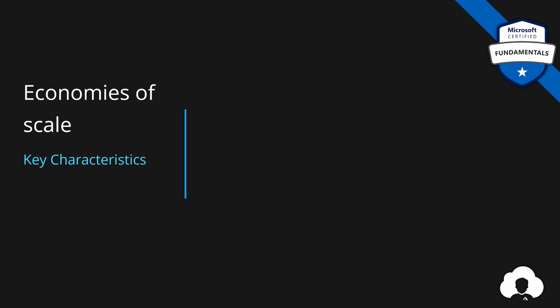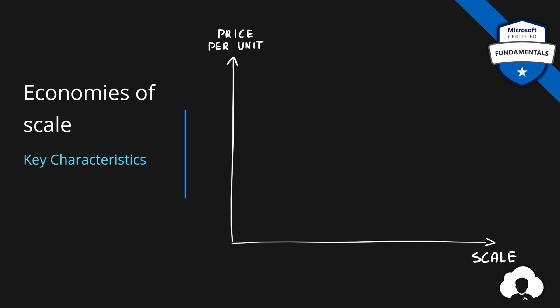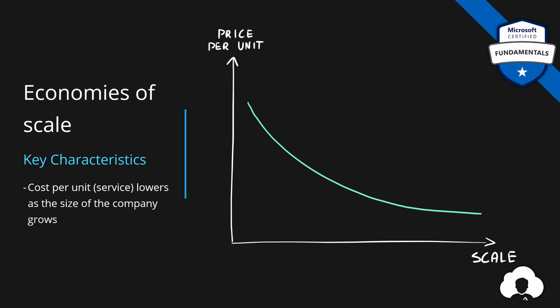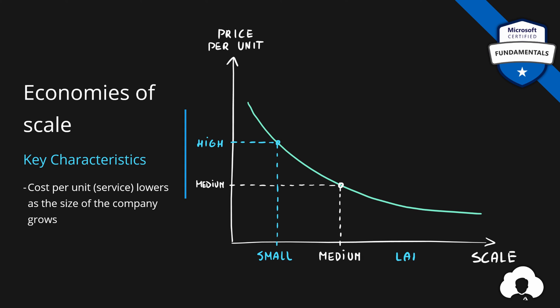To quickly summarize: as your company grows, your price per unit lowers because companies get more efficient at what they're doing. If you have a small company, your price per unit will be quite high. If you have a medium company, your price per unit will be better but still in a medium range. And if you have a very large company, your price will be quite low and very competitive on the market.